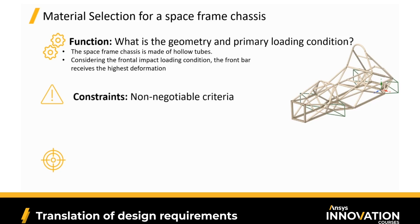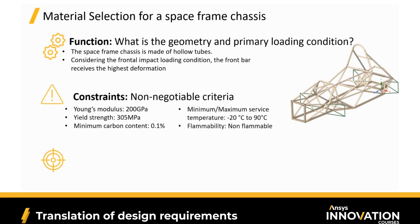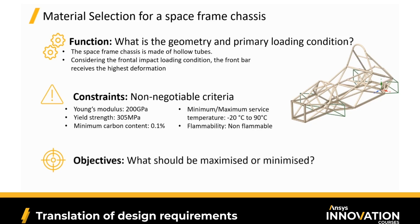The constraints are the non-negotiable criteria — the properties the material absolutely must have. The competition rules can place some constraints, for instance a minimum Young's modulus, yield strength, or carbon content. We can also place our own constraints, such as a minimum or maximum service temperature and choosing materials that are definitely non-flammable. Our objectives are what we want to minimize or maximize — in this case, we're interested in finding the lowest weight and lowest cost materials.